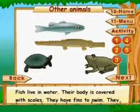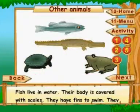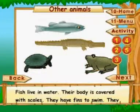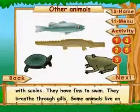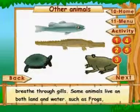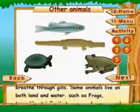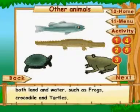Fish live in water. Their body is covered with scales. They have fins to swim and they breathe through gills. Some animals live on both land and water, such as frogs, crocodile and turtles.